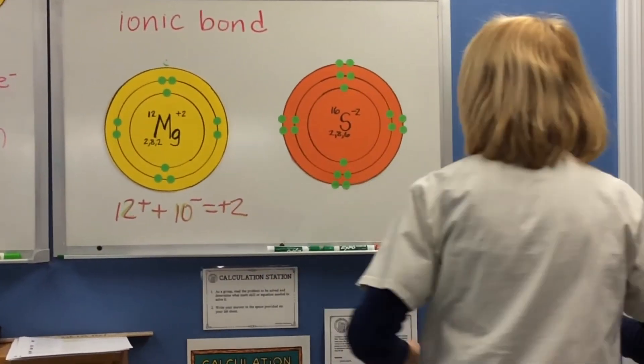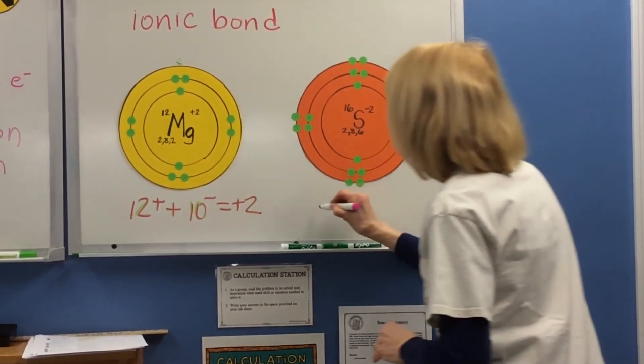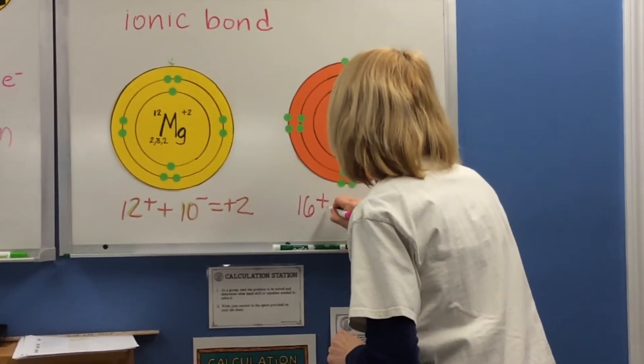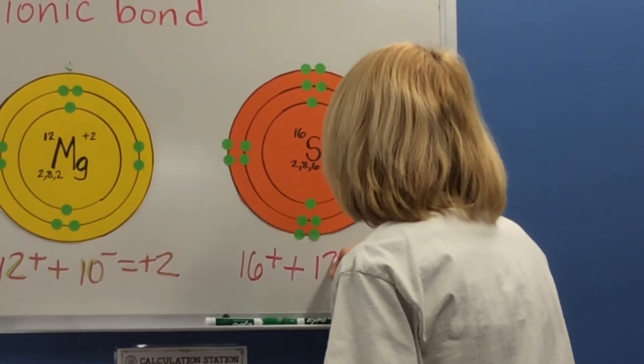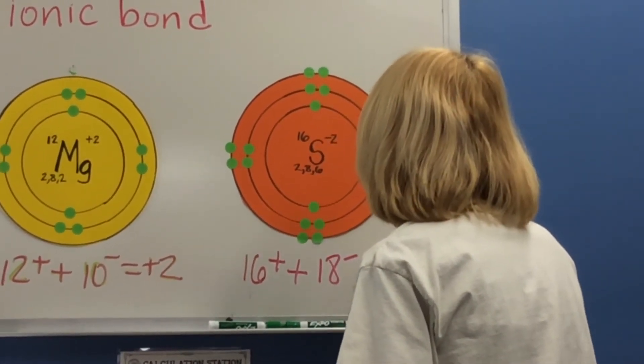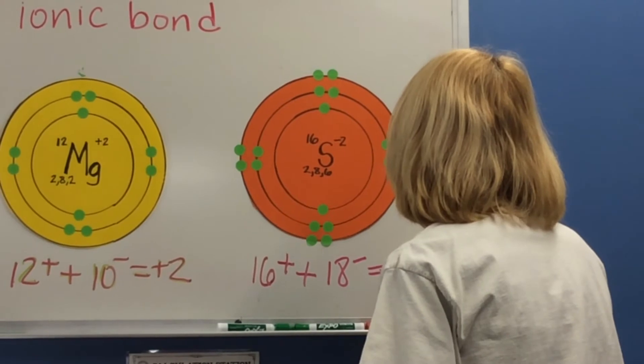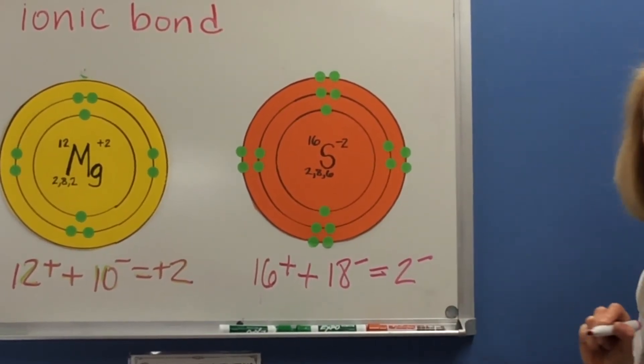Sulfur over here has 16 protons, 18 electrons. So it has an overall charge of minus 2 or 2 minus.